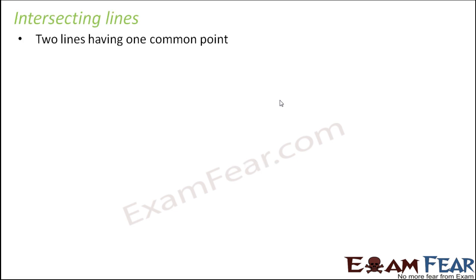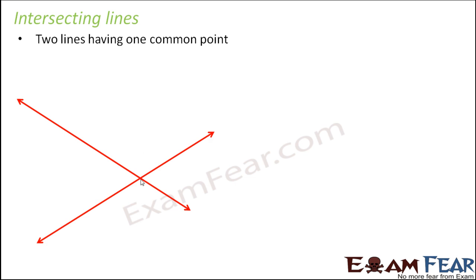When we talk about intersecting lines, these lines have a common point because they cross over each other at a particular point. This point where they cross over each other is called the point of intersection, because this is the point where they meet.